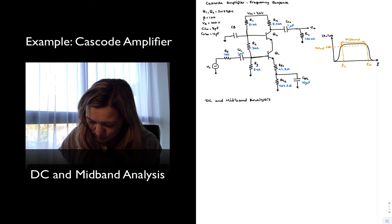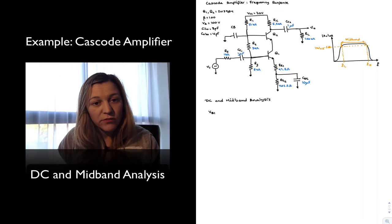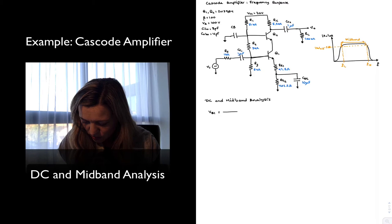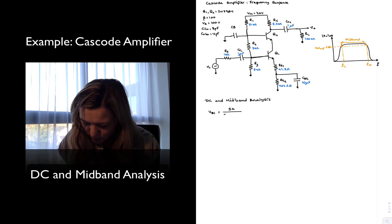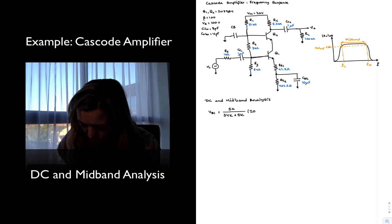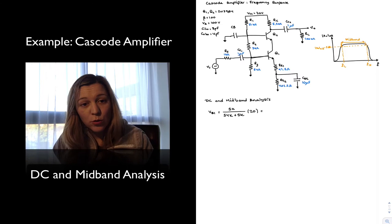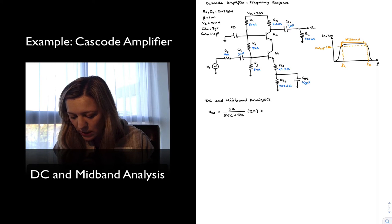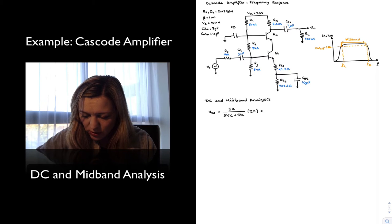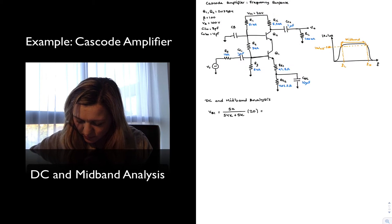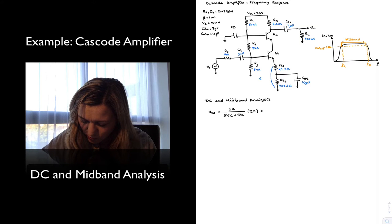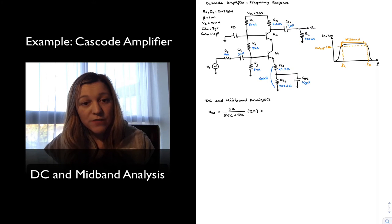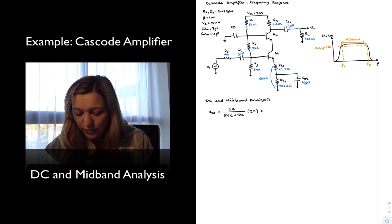Let's start the DC analysis. I'm going to calculate VB1, the base voltage for transistor 1, which is going to be equal to 5K divided by R1 plus R2 — which is 54K plus 5K — times VCC, which is 20V. Notice that I have ignored the base current going into Q1, simply because my overall emitter resistance connected to Q1 is 500 ohms, which multiplied times beta is 50K, since beta is 100, and R3 is much smaller — it's 5K.